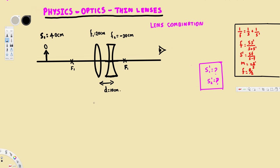In this video we are going to see an example on lens combination. We have a converging lens and a diverging lens. The converging lens focal length is 20 centimeters and the diverging lens focal length is negative 30 centimeters. The question is asking us to find the image distance s1 prime, which is the image formed by the converging lens, and s2 prime, the image formed by the diverging lens.